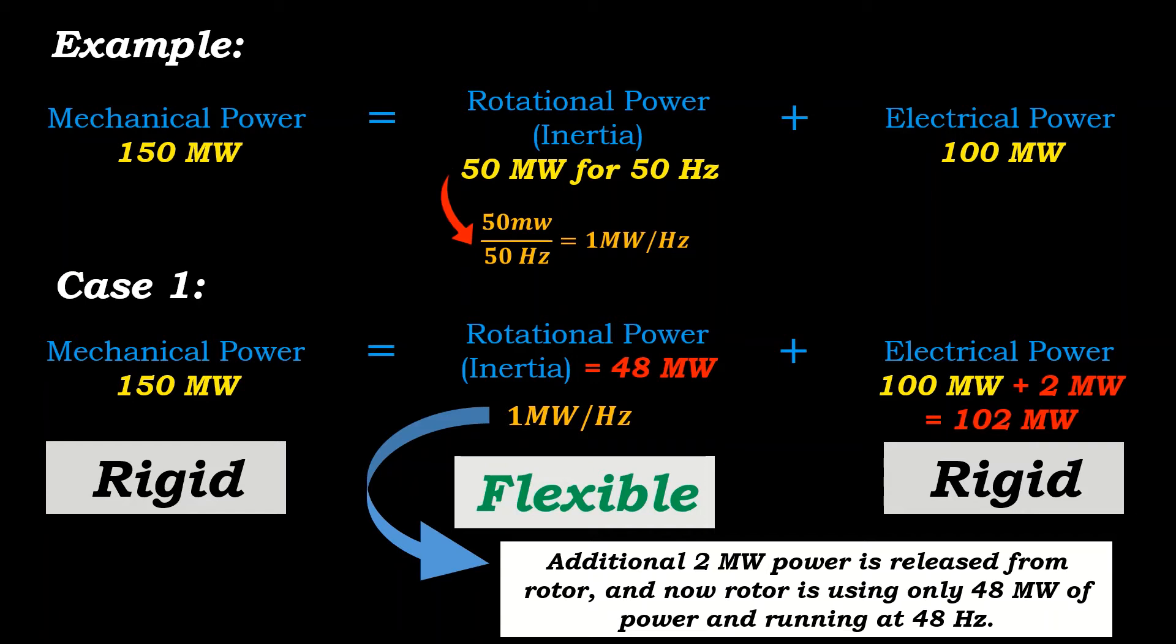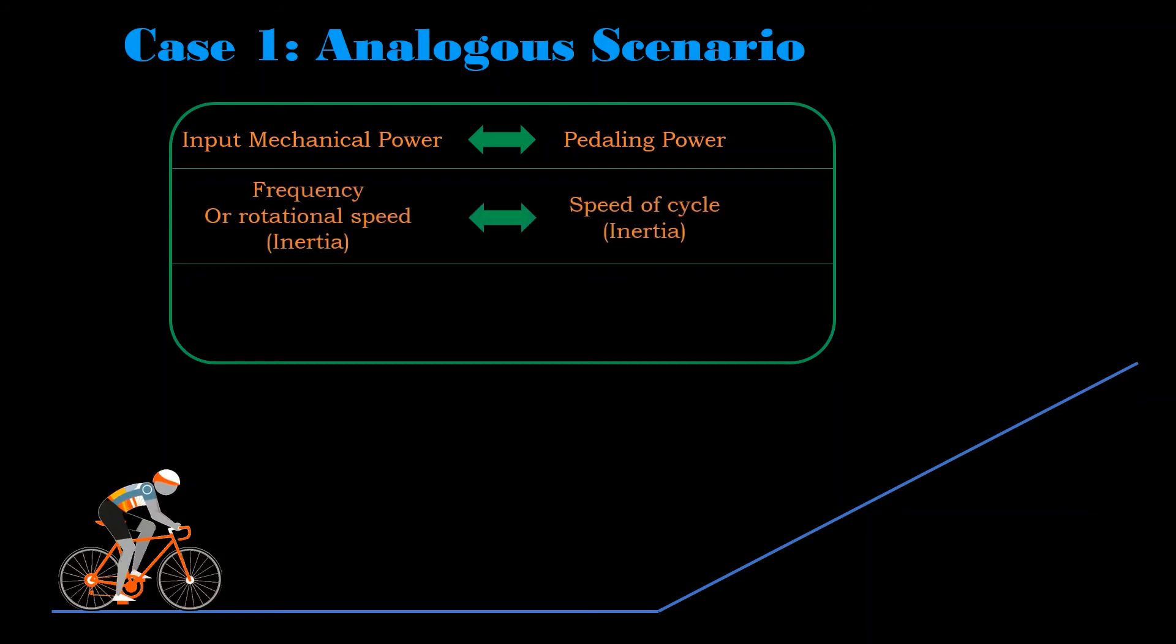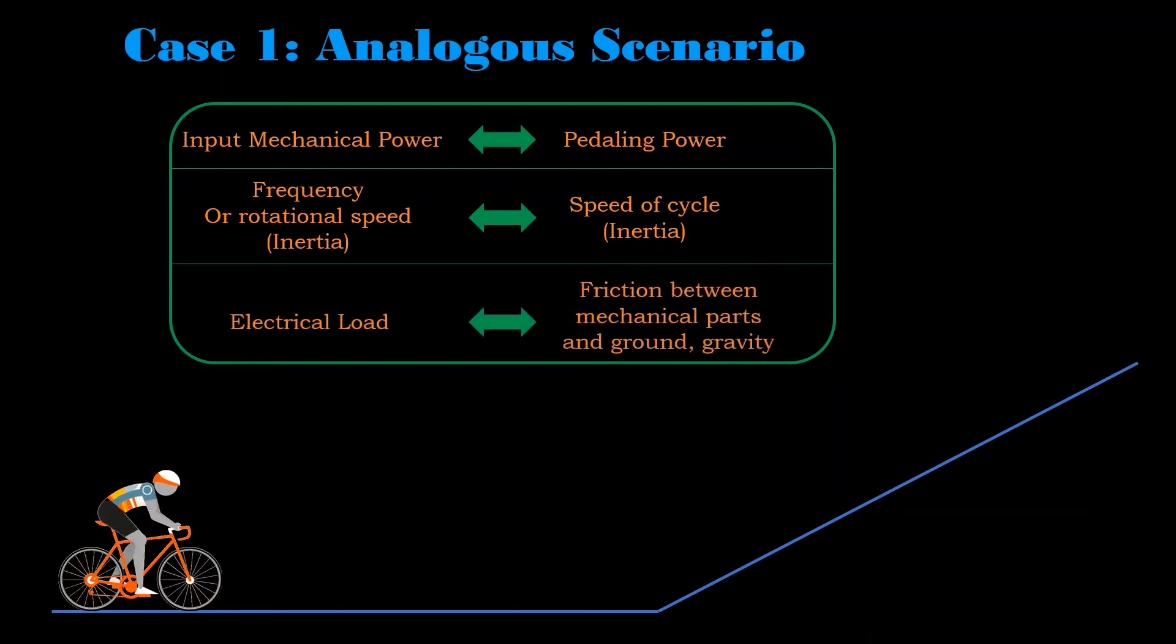Simple bicycle analogy can be used to understand it better. Consider input mechanical power in generator analogous to the input pedaling power. Rotational speed or rated frequency is analogous to the speed of bicycle which we want to maintain. And the constant power load is analogous to constant forces opposing the motion of cycle, for example, friction between mechanical parts of cycle, friction to ground, and gravity.